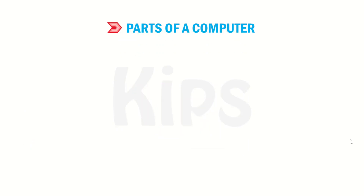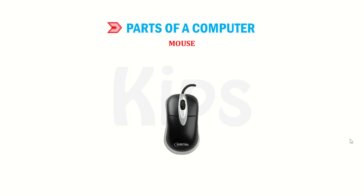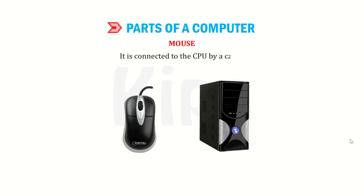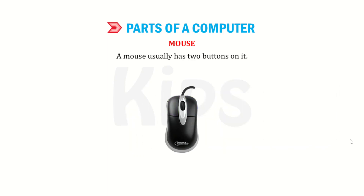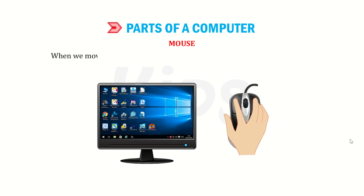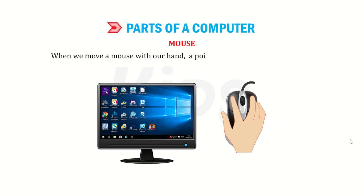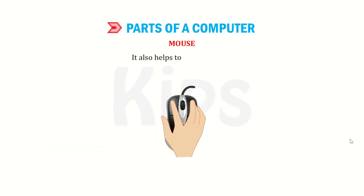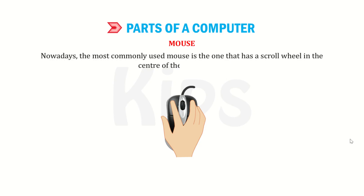Now we shall discuss about the mouse. A mouse is a pointing device. It is connected to the CPU by a cable. A mouse usually has two buttons on it. It is used to point, select and move any object on the screen. When we move a mouse with our hand, a pointer on the screen moves in the same direction. It also helps to draw pictures. Nowadays, the most commonly used mouse has a scroll wheel in the center of the two buttons.